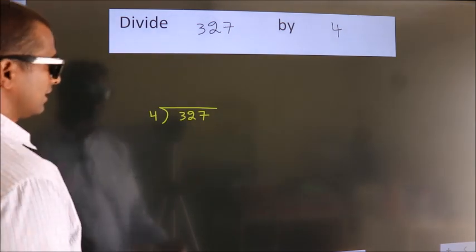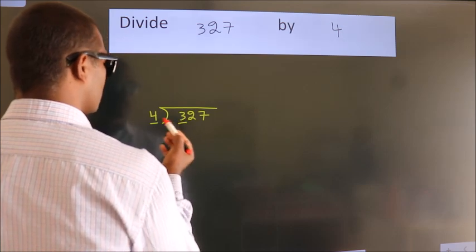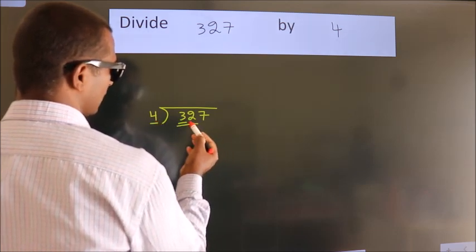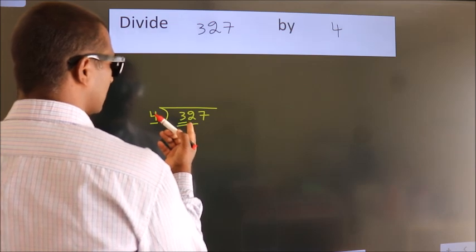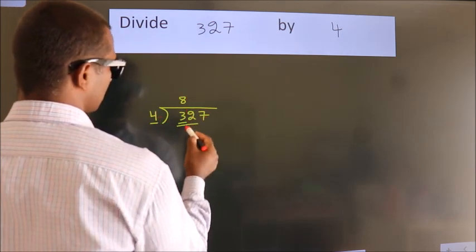Next, here we have 3, here 4. 3 is smaller than 4, so we should take 2 numbers: 32. When do we get 32? In the 4 table, 4 times 8 is 32.